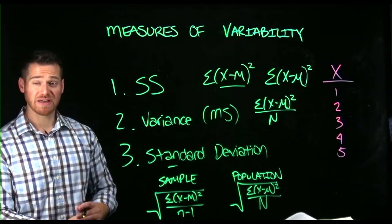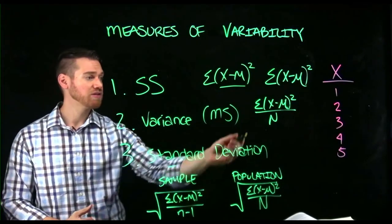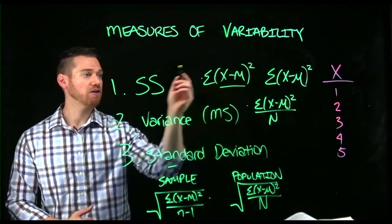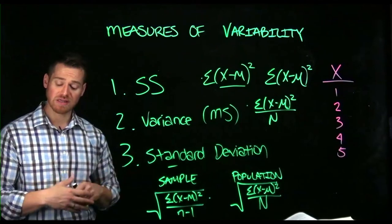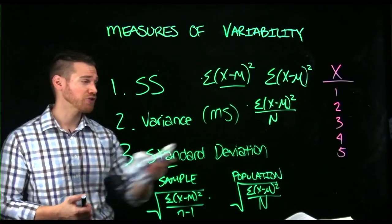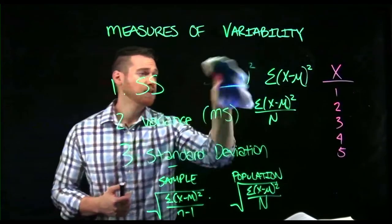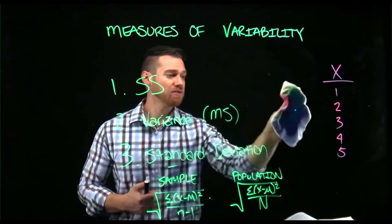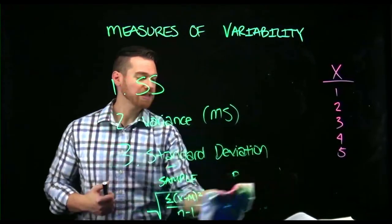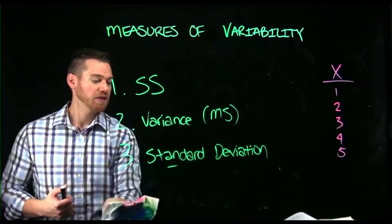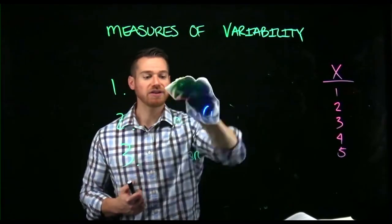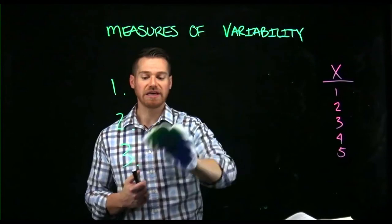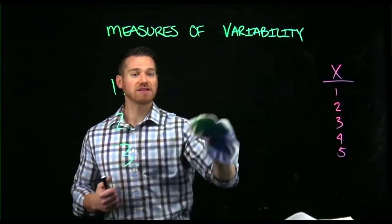And so these are the standard deviations. So you see that sum of squares is required in all of our calculations. And so we start with sum of squares, and then we can progress to calculate the others. So let's practice these. We've seen the equations. We've talked about how they're related. Let's practice these with this set of data. So we're going to do the calculations now from our data, imagining it's a sample and imagining it's a population.